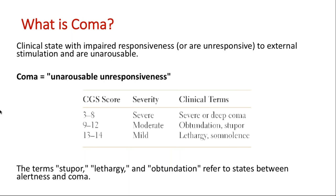Coma in clinical practice can be assessed using different scoring systems. The most commonly used is the Glasgow Coma Scale, which can subclassify states from alert, drowsy, delirious, obtunded, stuporous, to comatose. It doesn't have diagnostic value, but it plays a key role in monitoring patient response in terms of level of consciousness throughout the course of treatment.